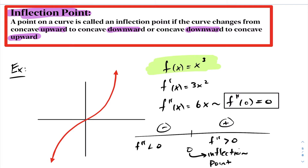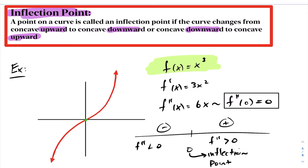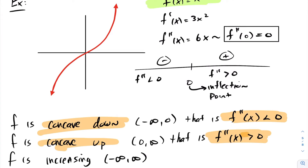So in summary, the function y equals x cubed has an inflection point at zero. From that, we can see that the function is concave downwards from negative infinity to zero, and concave upwards from zero to infinity. Lastly, notice that f prime at x equals 3x squared, which is always greater than zero. And because of that, we know our function is increasing on its domain.